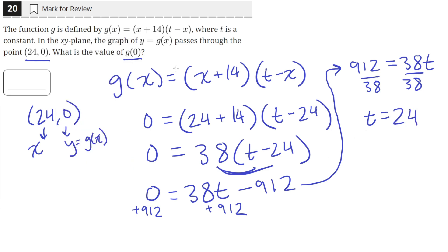So the value of t is 24, and we need to find the value of g. Now we have the full equation for g. So g(x) equals x plus 14 times 24 minus x.